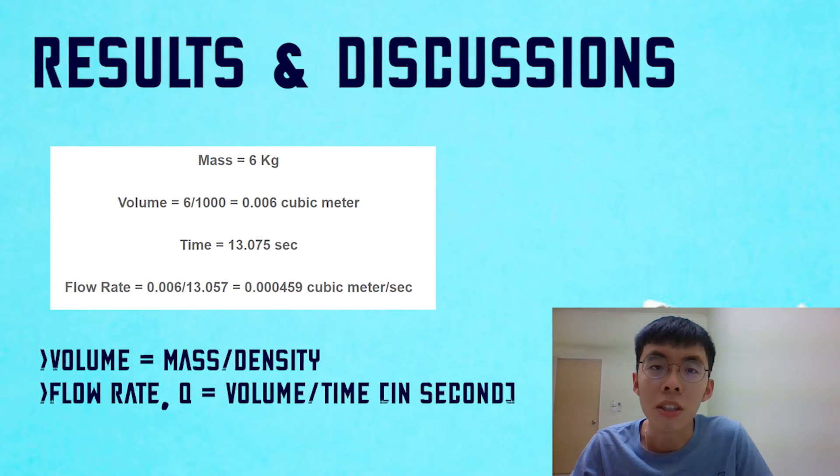First, we need to obtain the flow rate of the fluid. As an example, if we have water of mass 6 kg and time of fluid flow of 13.075 seconds, that gives us a volume of 0.006 cubic meters, since the density of water is a thousand kilograms per cubic meter. This produces a flow rate of 0.000459 cubic meters per second, as flow rate is volume over time.